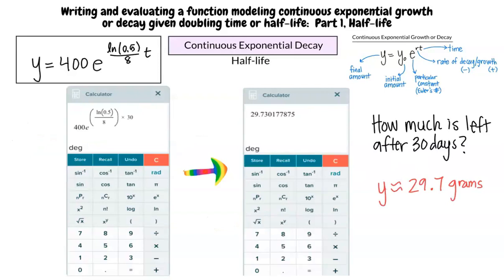For example, if we wanted to determine the amount left after 30 days, we would substitute 30 for t and get about 29.7 grams. But make sure you are careful when rounding. Do not round intermediate steps and only round as directed.